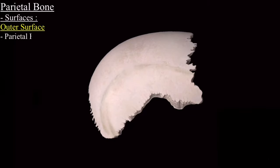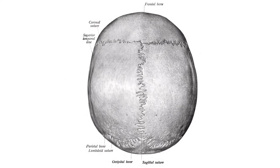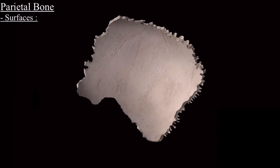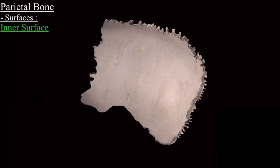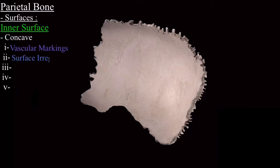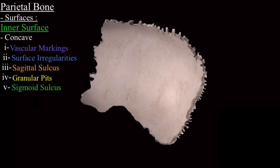Next is the parietal foramen. Close to the posterior end of the superior border on the outer surface, there is a foramen called the parietal foramen. Next is the inner surface of the parietal bone. The inner surface is concave in nature. On the inner surface there are five important structures: vascular markings, surface irregularities, sagittal sulcus, granular pits, and part of the sigmoid sulcus.